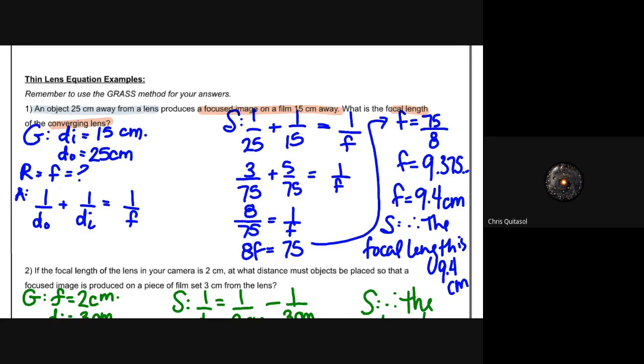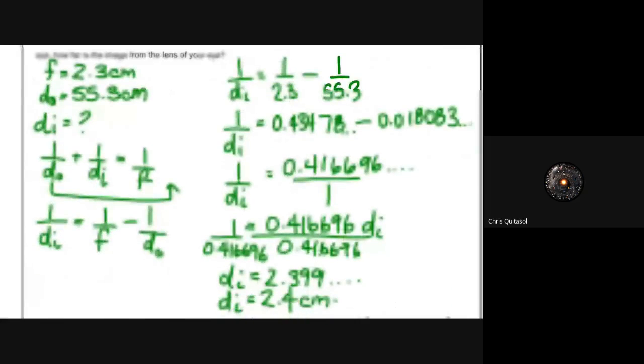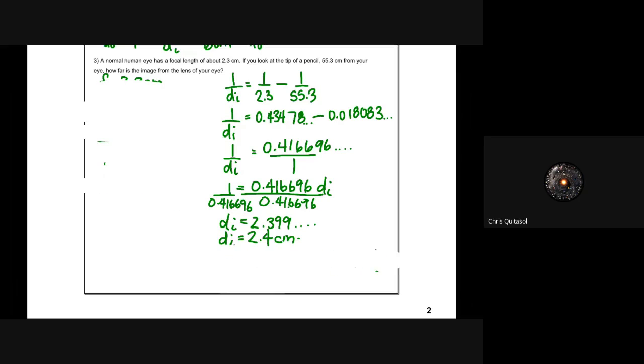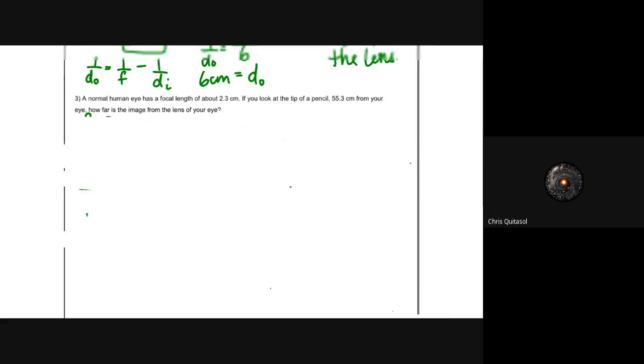Let's take a look at one more example — the bottom one, as it is the trickiest. When looking at this equation, it's really important to remember those three rules. A normal human eye has a focal length of about 2.3 centimeters. If you look at the tip of a pencil 55.3 centimeters from your eye, how far is the image from the lens of your eye? The focal length is 2.3 centimeters and the object is placed 55.3 centimeters away.